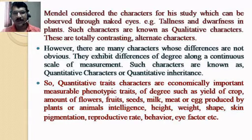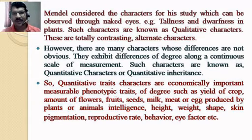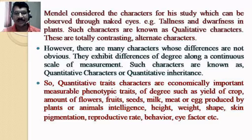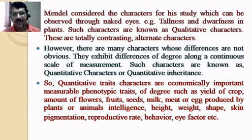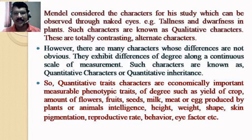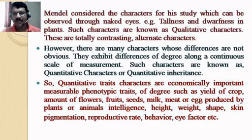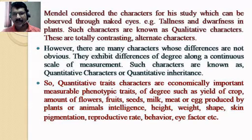For example, the amount of flowers produced by a plant — there is no fixed amount present in different plants. We can't say this plant will produce 20 flowers and another will produce only 10. This alternation is not found in quantitative characters; different plants will produce different amounts of flowers. The same applies to fruits and seeds. Milk production by a cow or buffalo also shows no alternate characters.